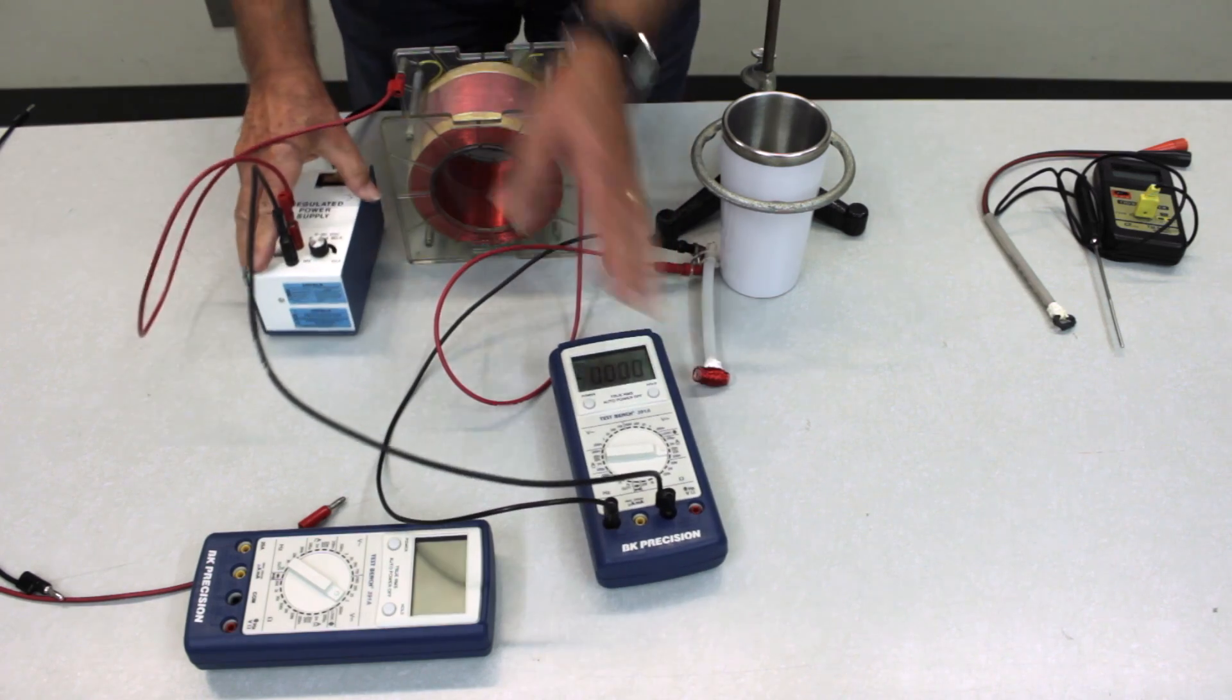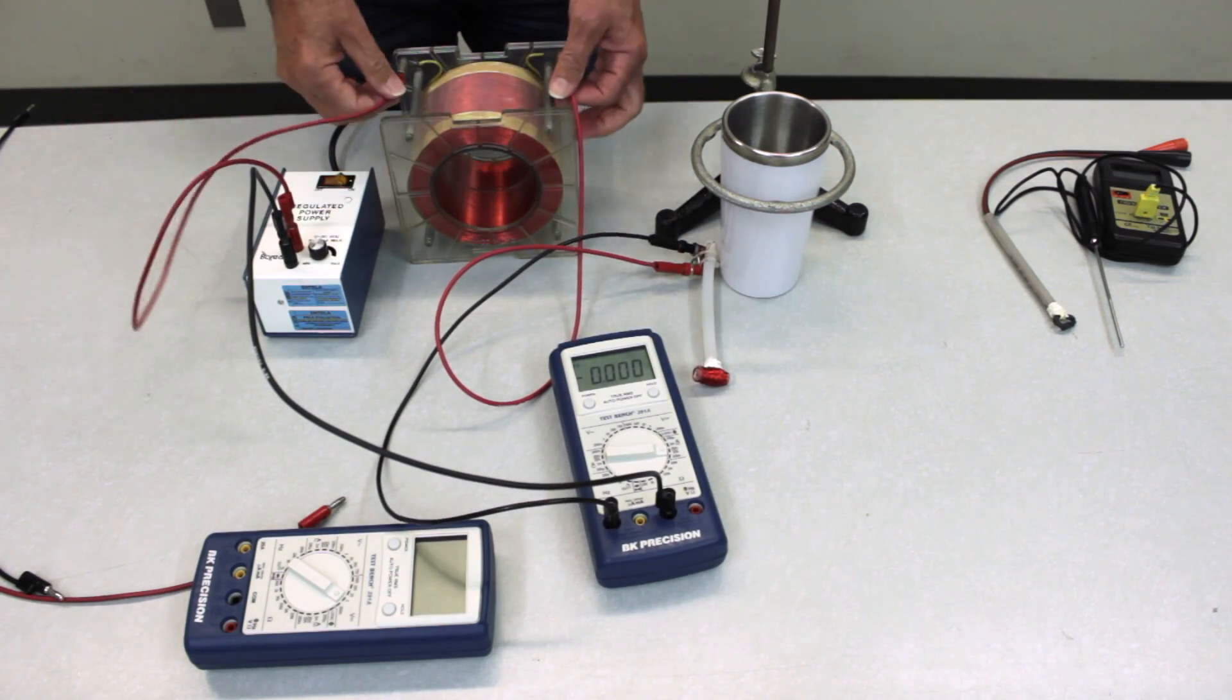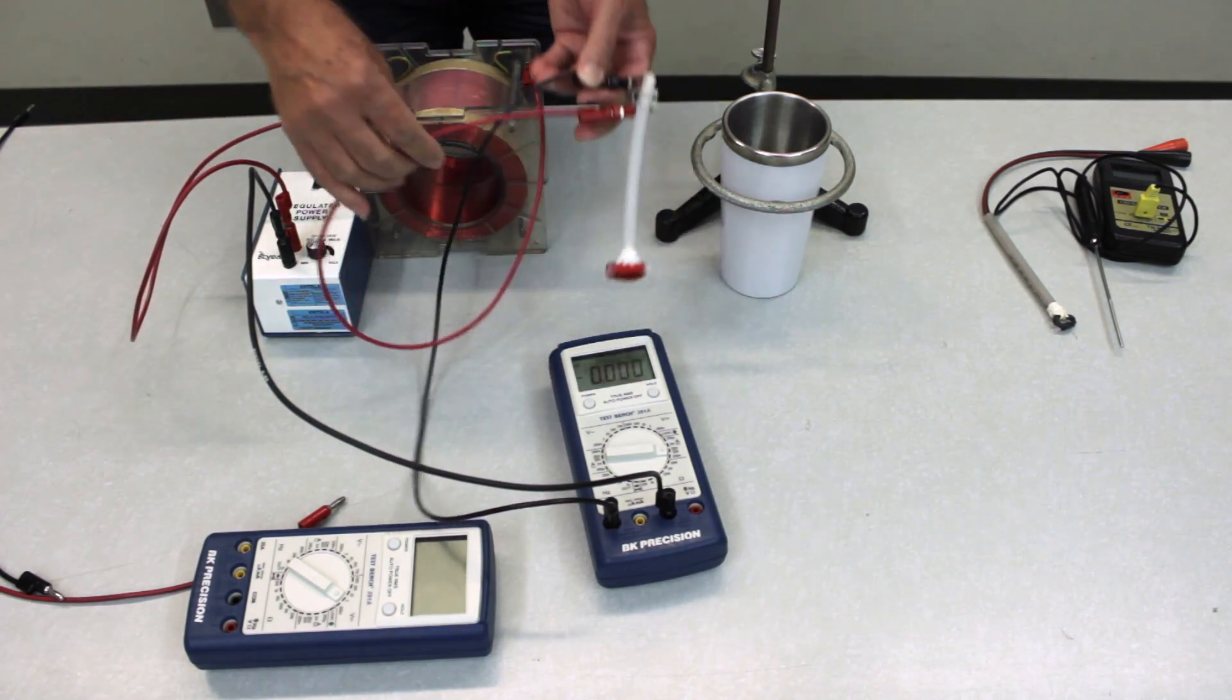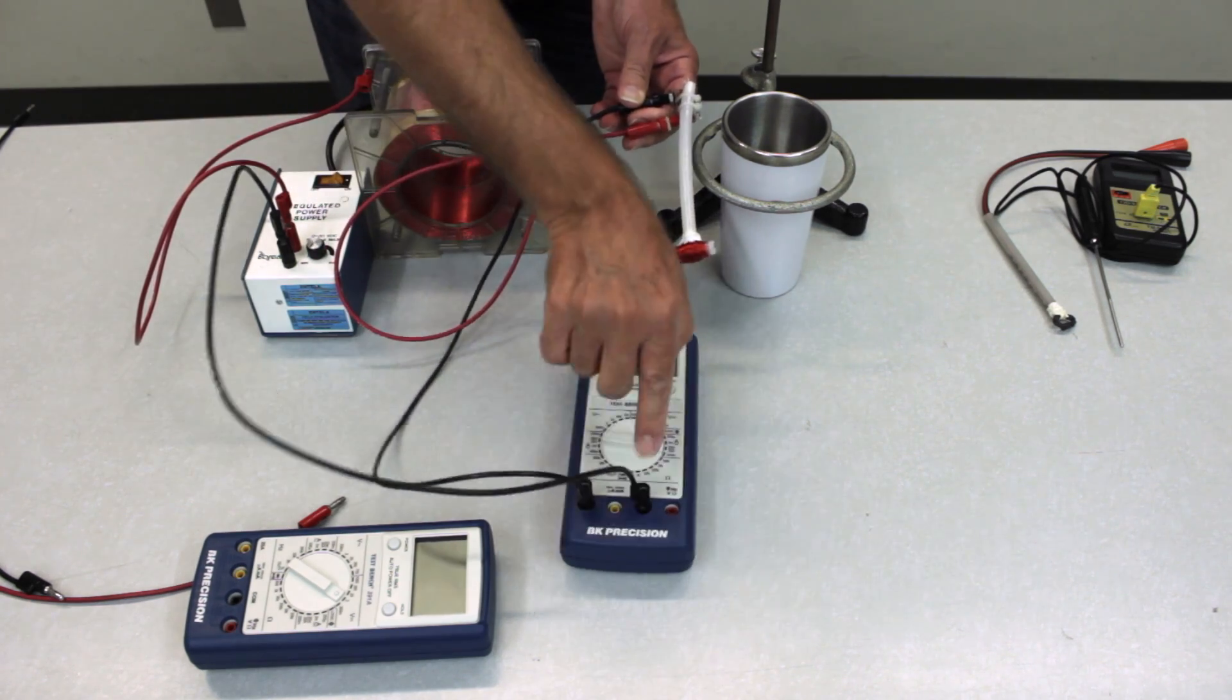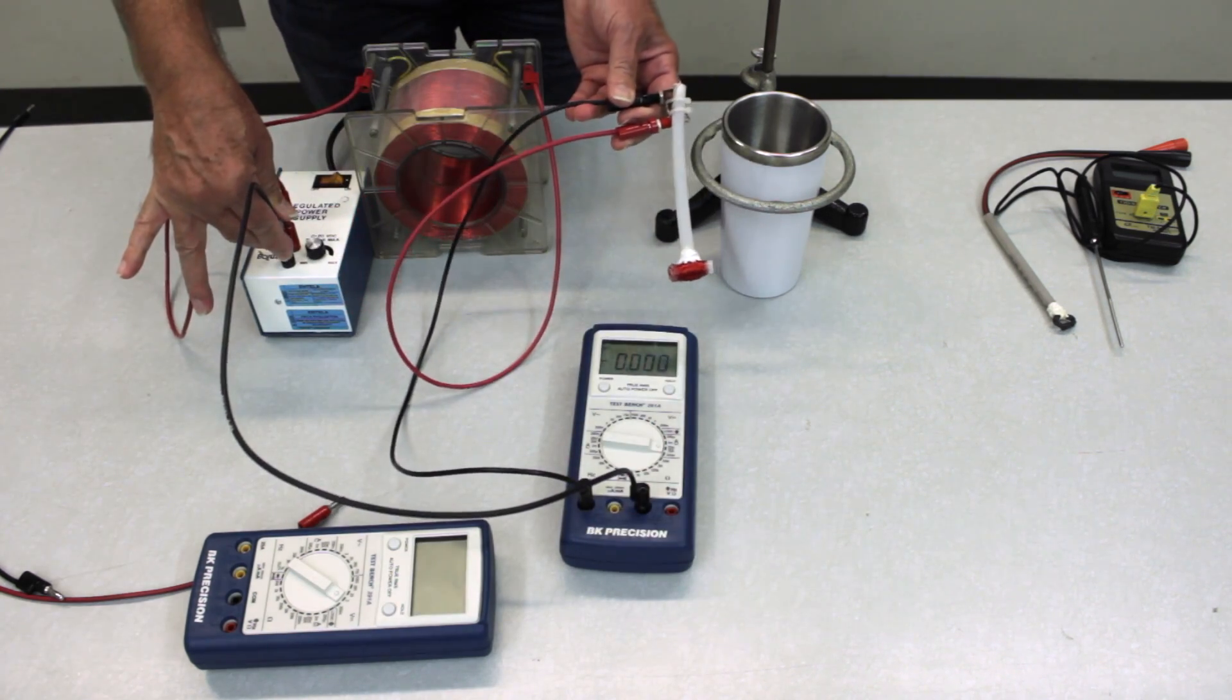The complete circuit is power supply, ballast resistor, sample resistance, current meter, and then back to the power supply.